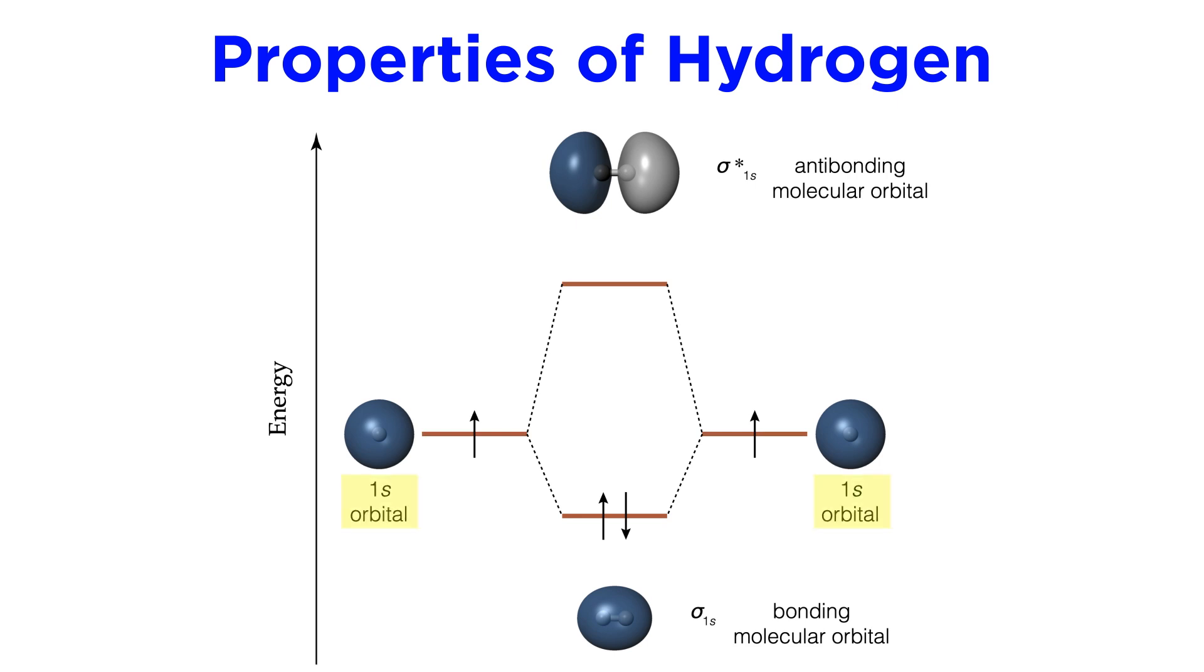The two 1s atomic orbitals will combine to form a sigma bonding orbital as well as a sigma antibonding orbital, and the two electrons will reside in the bonding orbital, producing the single covalent bond between the atoms.